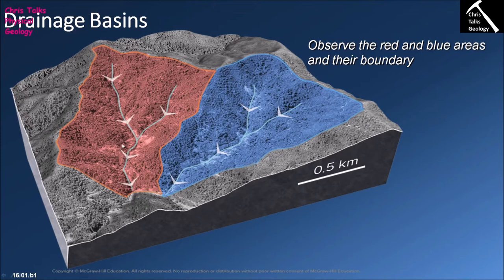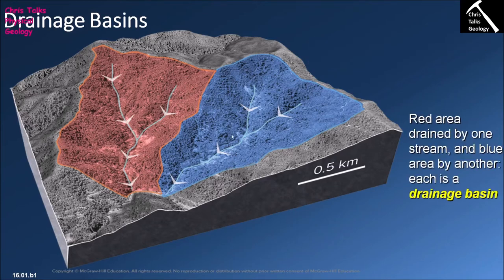The water comes from an area of the Earth's surface referred to as a drainage basin — the area drained by an individual river. In this diagram we have two separate rivers and two separate drainage basins. The left-hand river drains the area marked in red, and the right-hand river drains the area marked in blue. These areas from which the river collects its water are referred to as that river's drainage basin.